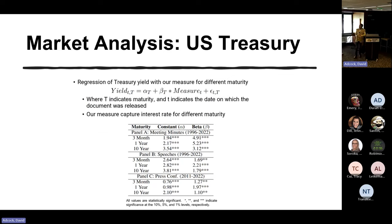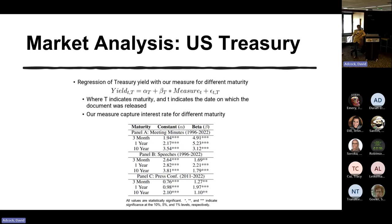We also examine how the hawkishness measure predicts US Treasury market behavior. Looking at different maturities — 10-year, 3-year, 3-month, and 1-year — the longer the maturity, the less impact our measure has. Monetary policy consistency affects short-term treasuries more than long-term ones.